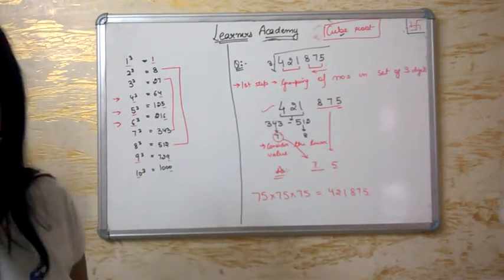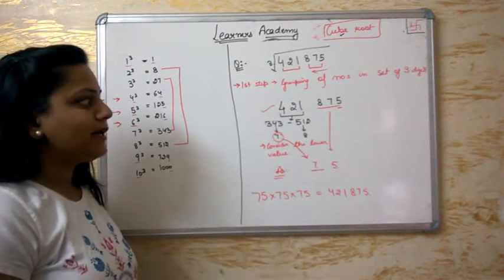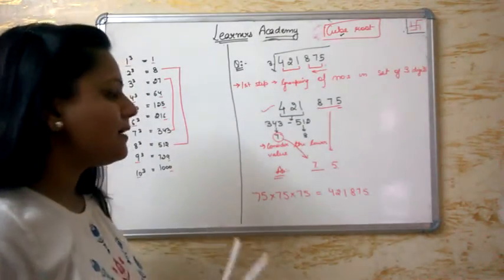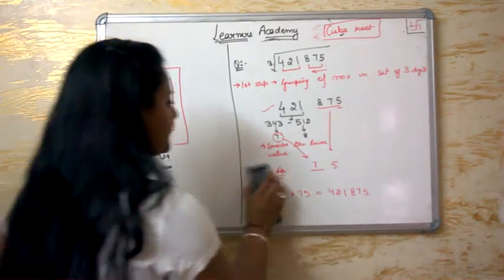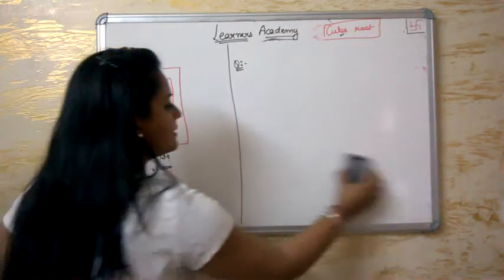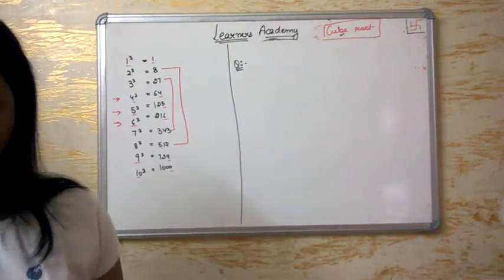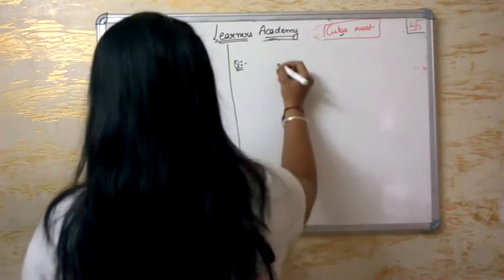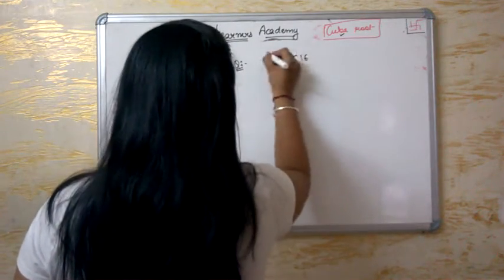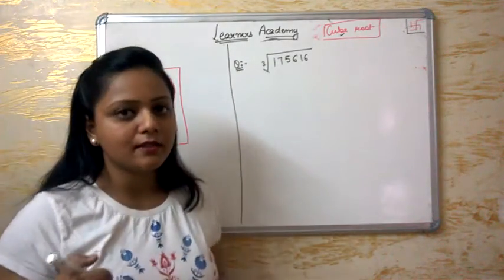I hope you understood this example. Now I will try to explain this technique with some more examples. Let's take up our second example. You try first. The question is: find the cube root of 175616.